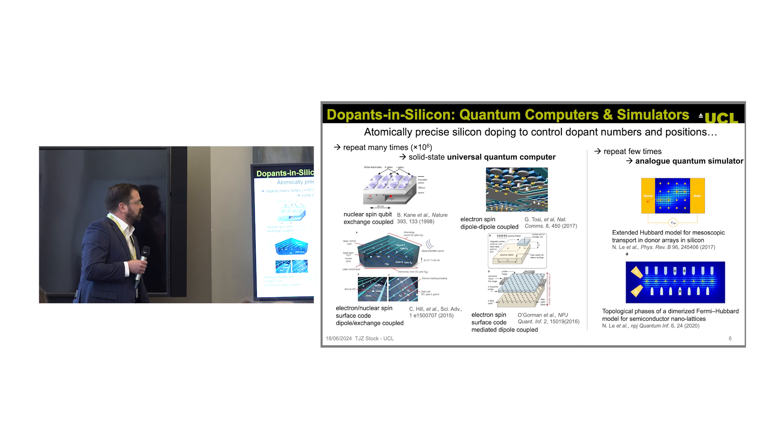There are various proposals where you can position individual dopants in silicon to build a quantum computer, using different approaches: either nuclear or electron spin, and different ways of entangling these qubits, either exchange-coupled or dipole-coupled. As we get to more sophisticated schemes, we relax the requirement of exactly how well we need to position these dopants, but you still need to know where they are. If we can fabricate with atomic precision, we can know where they are.